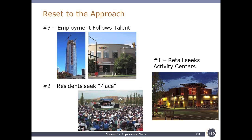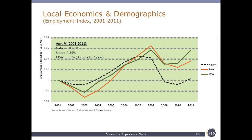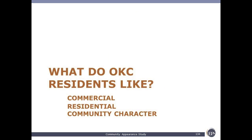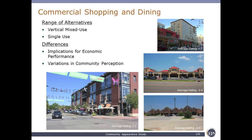Residents are seeking place, and often retail — eating and drinking in particular — are part of that placemaking element. Once you have residents, you ultimately get employment, because employment is following the talent. Oklahoma City is a little insulated because it has some very successful industry committed to the community, but in general corporations are following where the talent is. Oklahoma City is doing very well in terms of employment and attracting talent in the Gen Y cohort. There's a direct link between the quality of spaces a community achieves and its economic vitality.